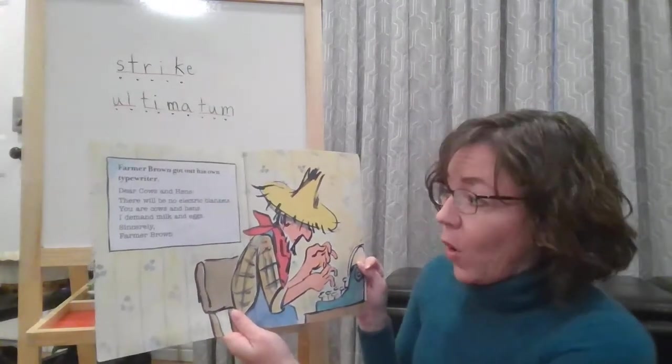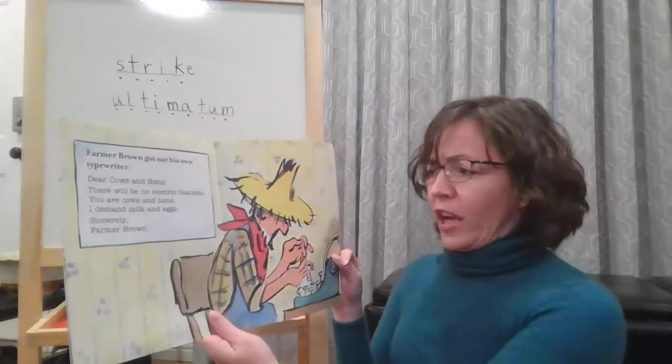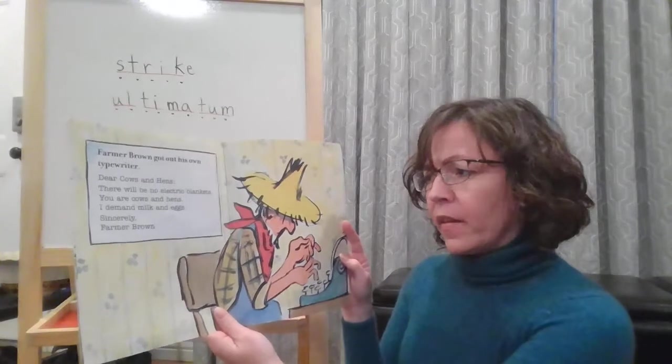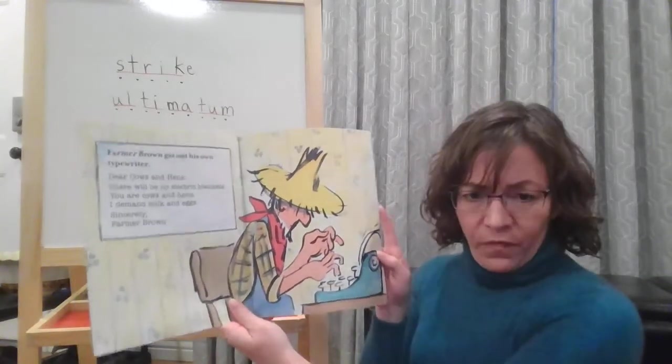Farmer Brown got out his own typewriter. Dear cows and hens, there will be no electric blankets. You are cows and hens. I demand milk and eggs. Sincerely, Farmer Brown.